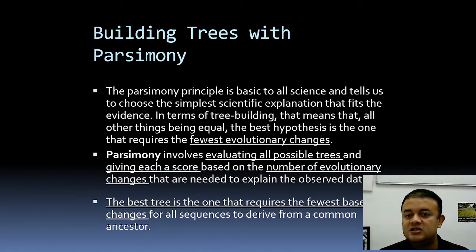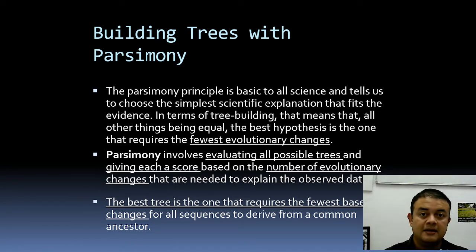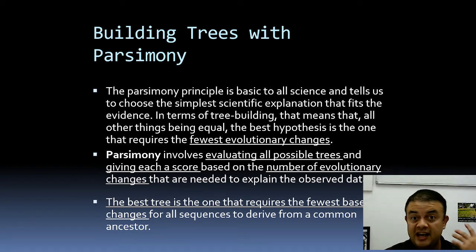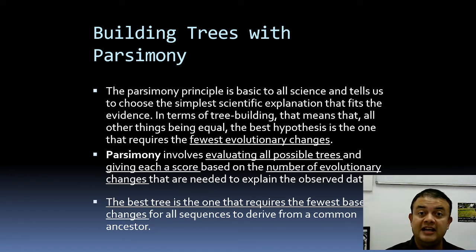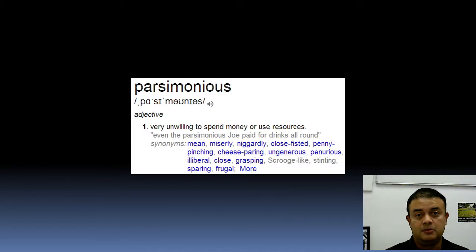The parsimony approach is a direct extension of Occam's Razor. Being parsimonious means reducing the number of steps — minimizing evolutionary changes — which is the same concept as minimum evolution. Parsimony involves evaluating all possible trees and giving each a score based on one criterion: the number of evolutionary changes needed to explain the observed data. The best tree is the one that requires the fewest base changes for all sequences to derive from a common ancestor.